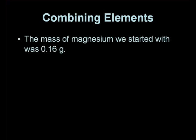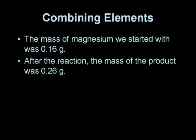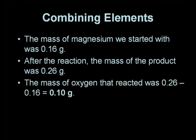The mass of magnesium we started with was 0.16 grams. We weighed the product at the end, the magnesium oxide, and this had a mass of 0.26 grams. So the mass of oxygen which was involved in the reaction is the difference between these two numbers. So 0.26 minus 0.16 equals 0.10 grams.